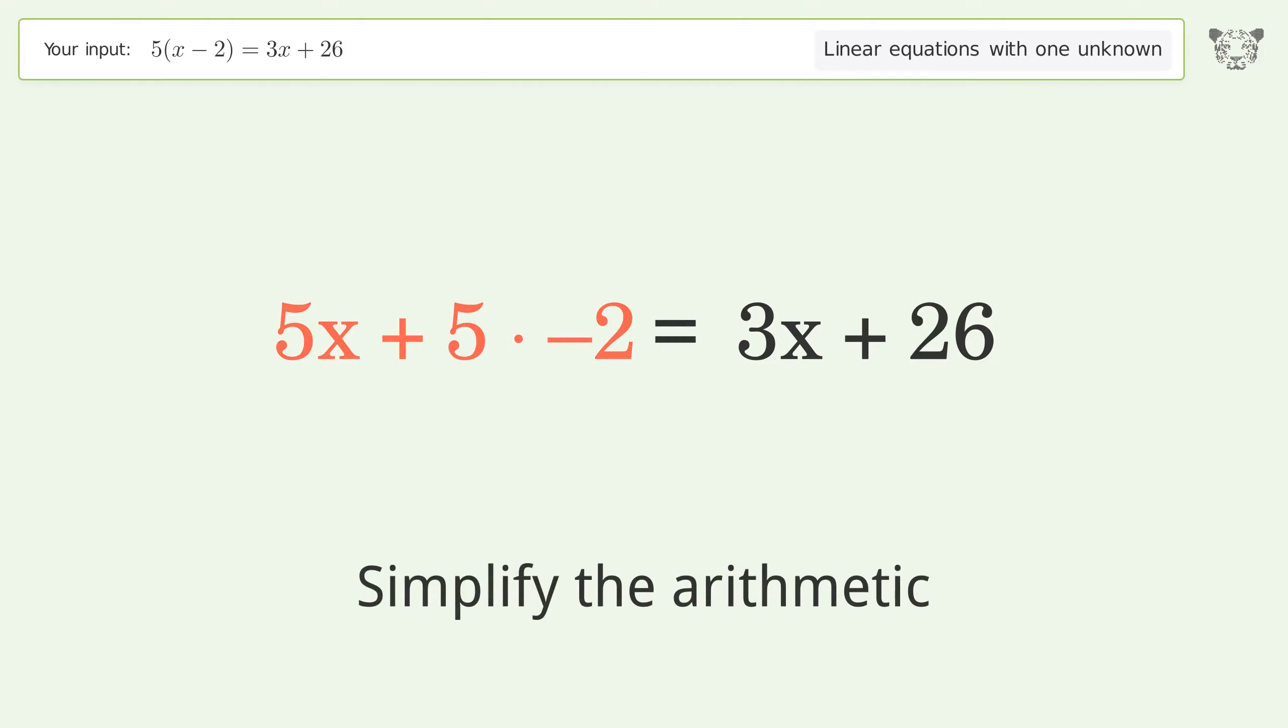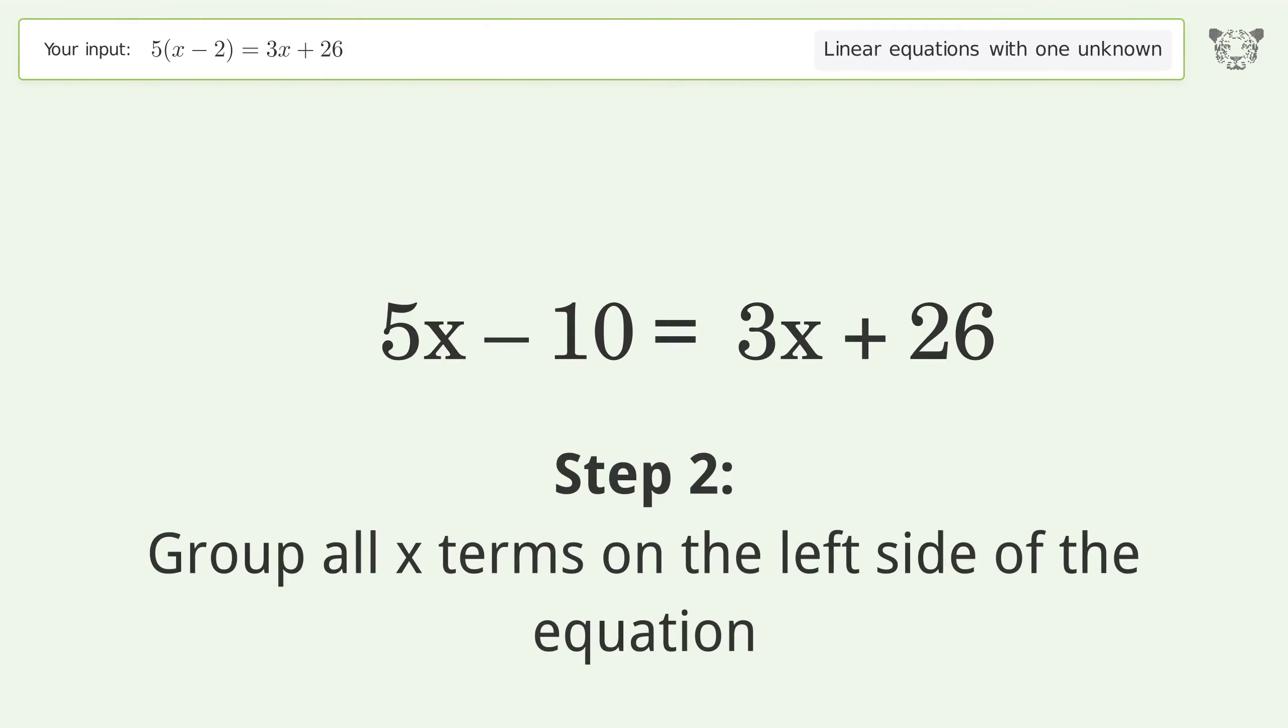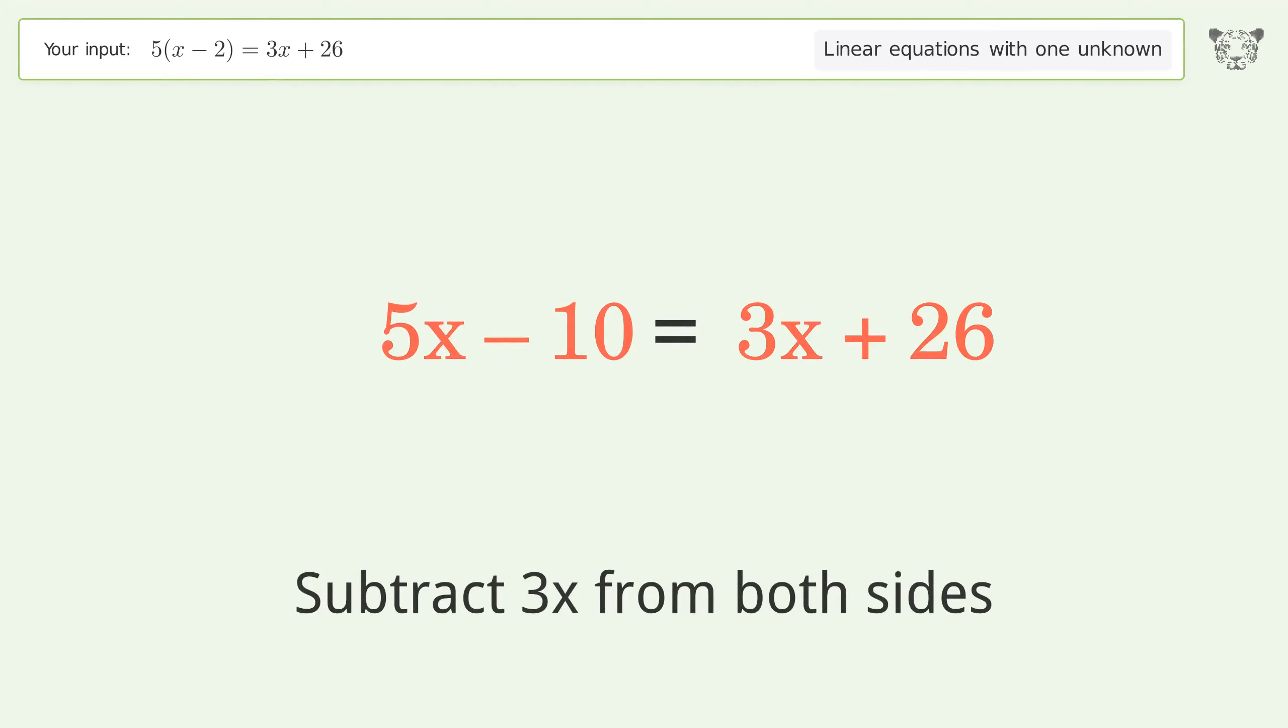Simplify the arithmetic. Group all x terms on the left side of the equation. Subtract 3x from both sides.